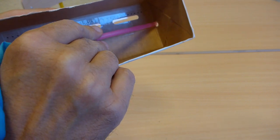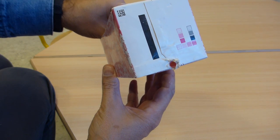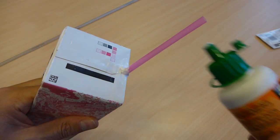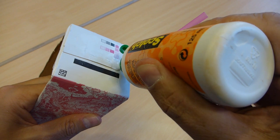Finally, you push the straw through the hole. Use some glue to affix the straw and seal the hole.